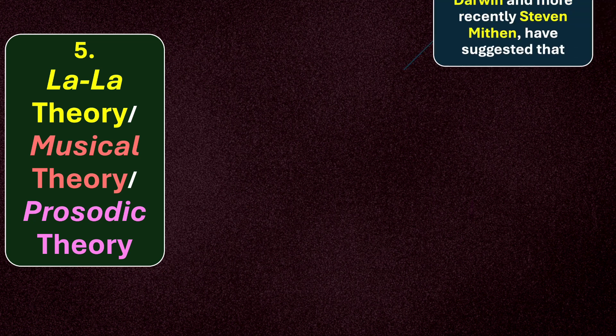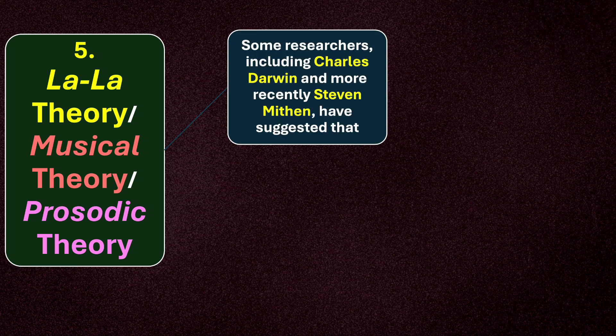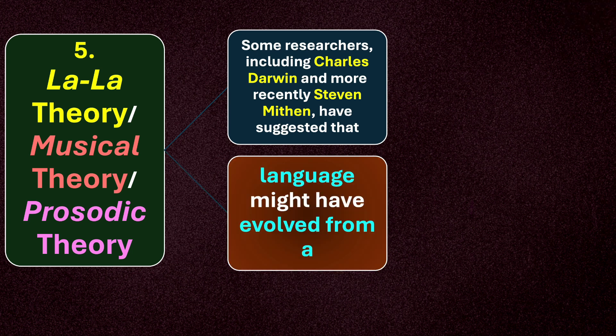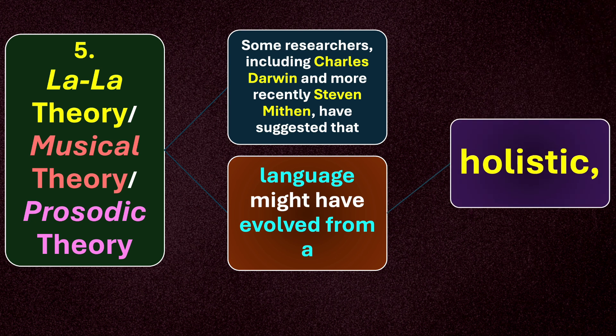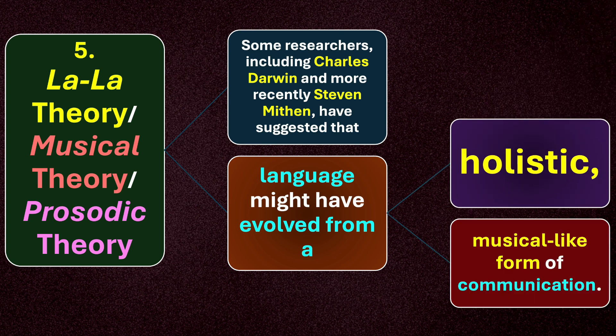We have number five: the la-la theory, sometimes called musical theory or prosodic theory. Some researchers, including Charles Darwin and more recently Esteban Meathen, have suggested that language might have evolved from a holistic or musical-like form of communication. Music is the spontaneous expression of human emotions, and this might have caused language to develop.